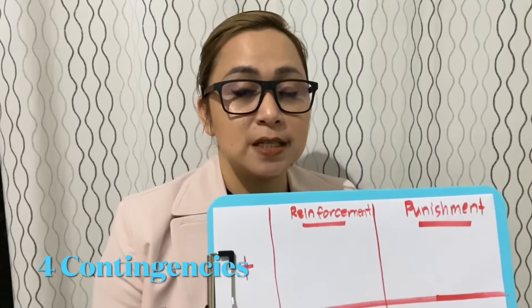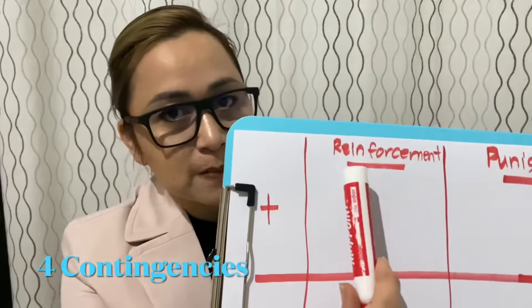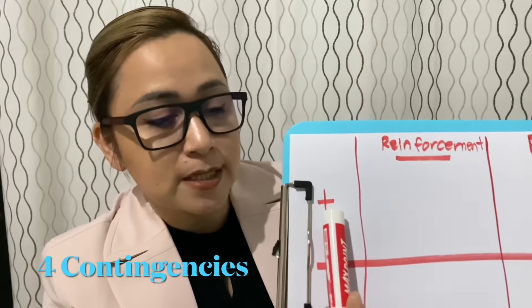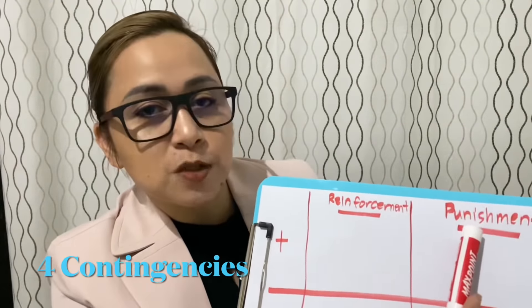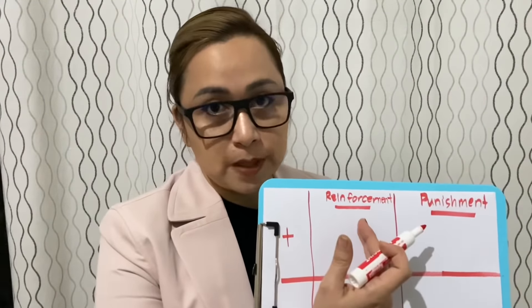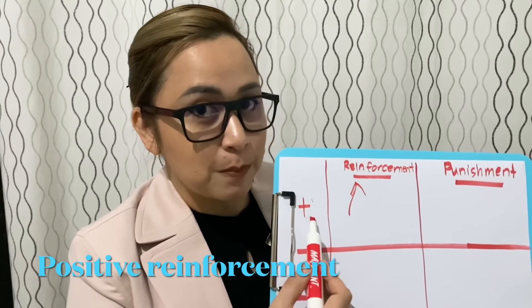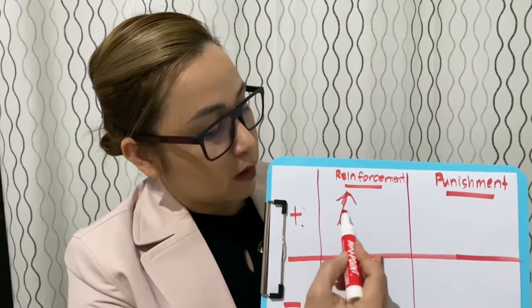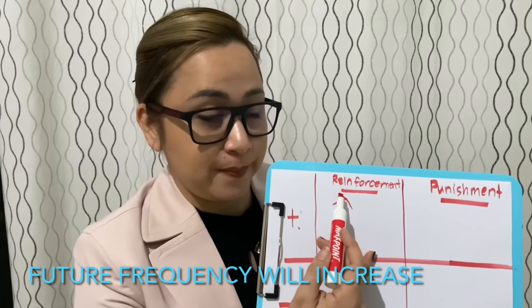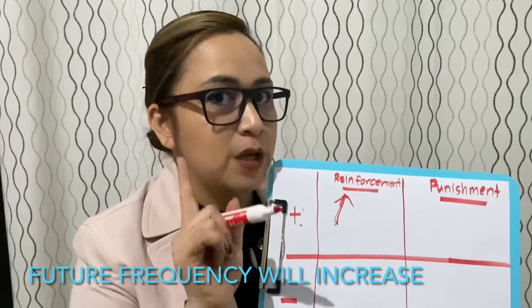So our behaviors are essentially turning into these four contingencies. Under reinforcement, we have positive reinforcement and negative reinforcement. And under punishment, we have positive punishment and negative punishment. These are all consequences. When do you say that a stimulus is a reinforcer or a positive reinforcement? You are adding something to the environment, and as a result, in the future, the behavior — not just the frequency but even the magnitude — will go up or increase. When you say reinforcement, the behavior always increases.